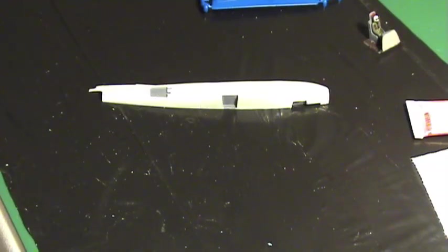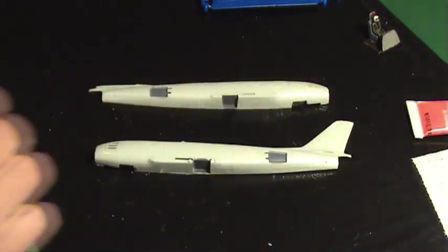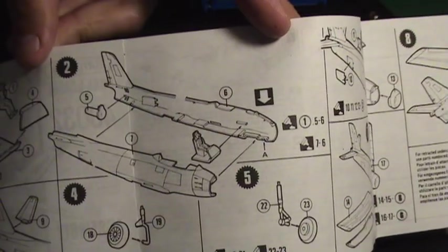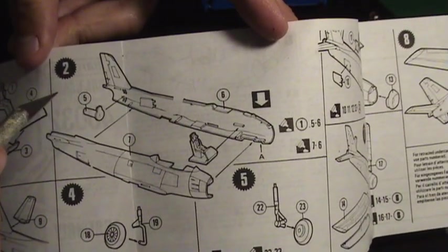After removing the two fuselage halves from the sprue, sand the edges to get them ready for gluing. Review the instructions and determine which other parts you need.